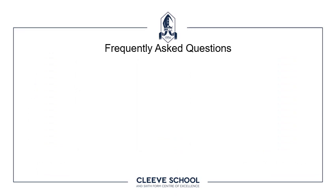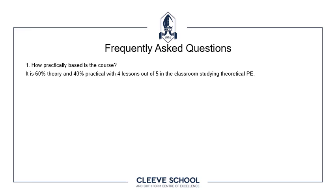Some frequently asked questions. How practically based is the course? It's important to stress that it is quite a theoretically based course — it's 60% theory and 40% practical. Although, within that practical element, a fair proportion of that 40% — specifically 10% — is made up of the GCSE PE coursework, which involves studying a performance and writing it up, so that has theoretical aspects to it. Remember, we spend four out of five lessons in the classroom studying theoretical PE.